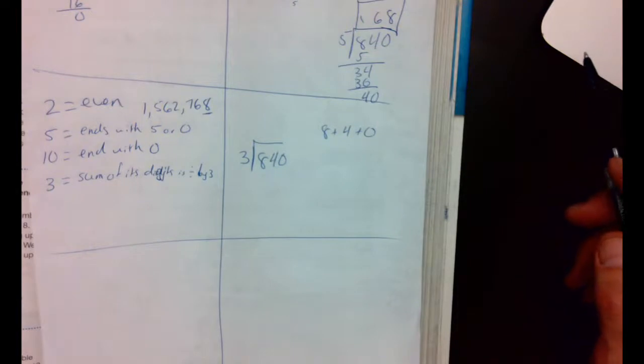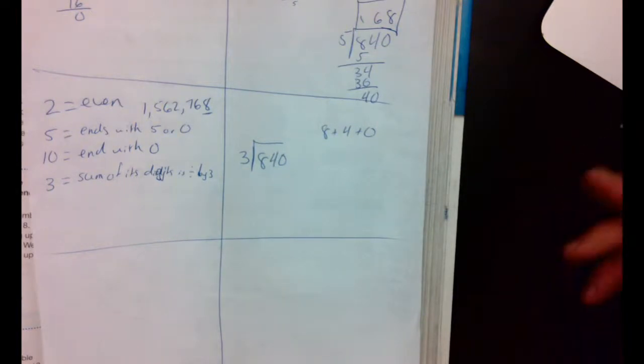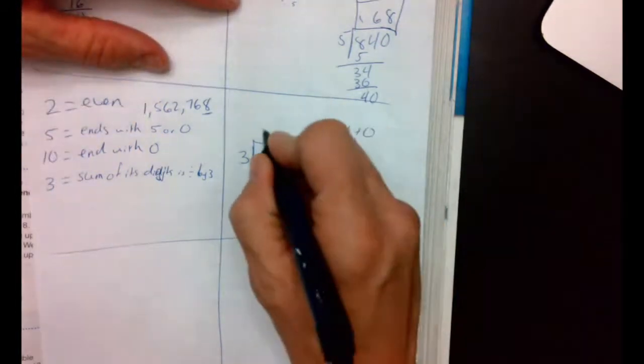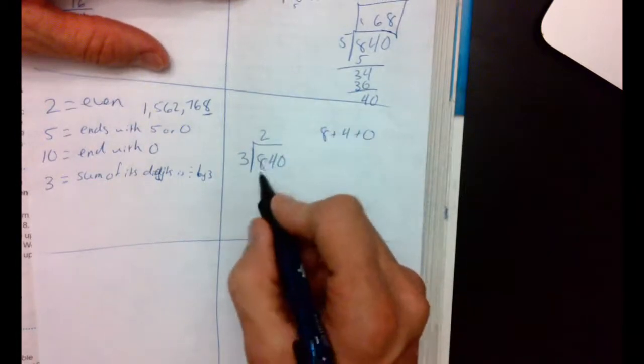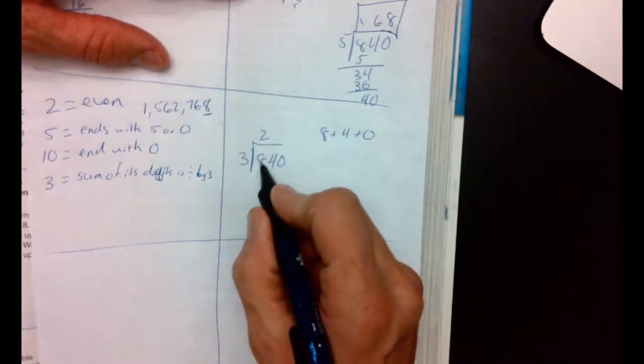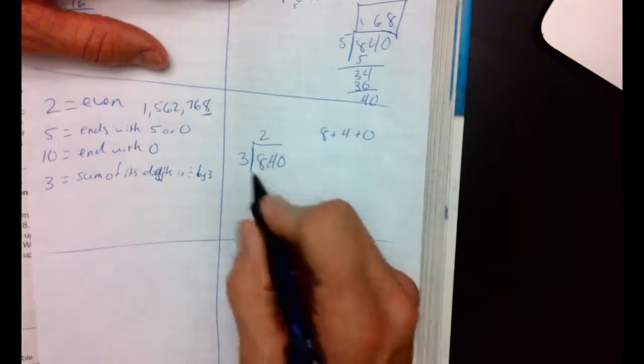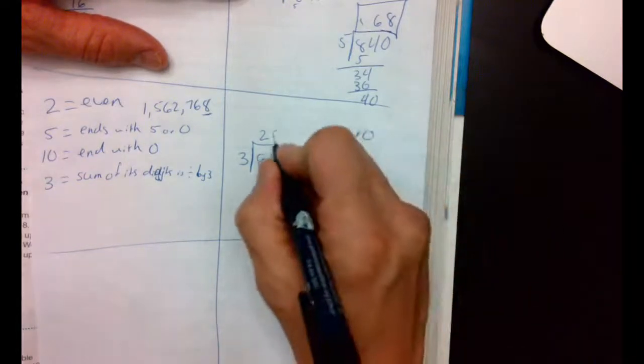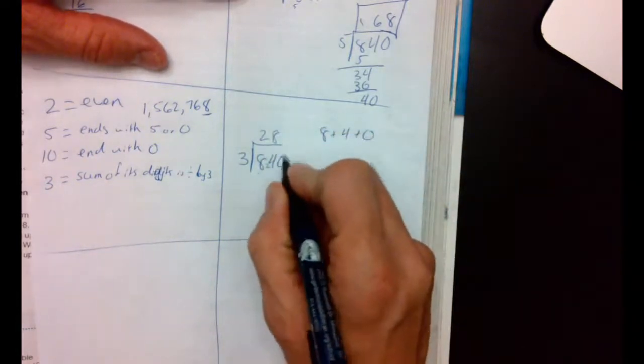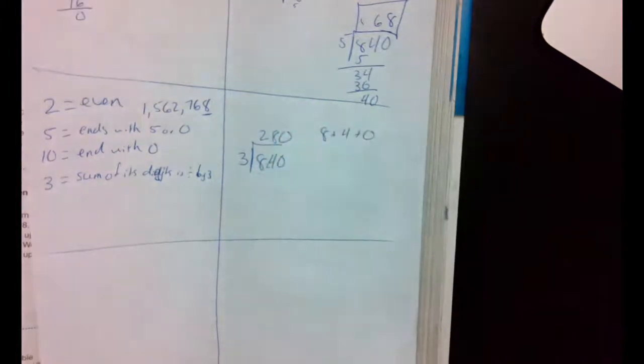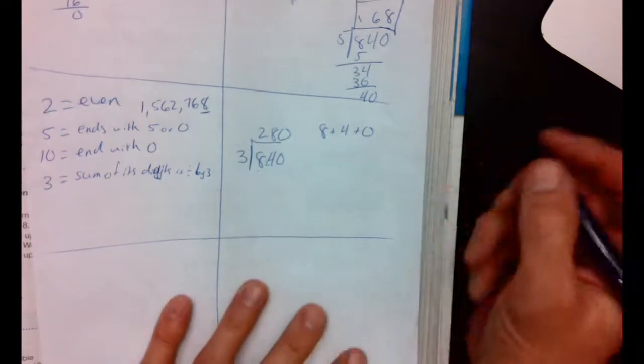Really? It doesn't look like it should be divisible by 3. Well, let's see if we're right. 3 goes into 8, 2 times. 2 times 3 is 6. I'm going to do short division. 8 minus 6 is 2, 24. 3 goes into 24, 8 times. Is 24 0? 3 goes into 0, 0 times. It was divisible by 3. So that's pretty cool. So you split the numbers apart.